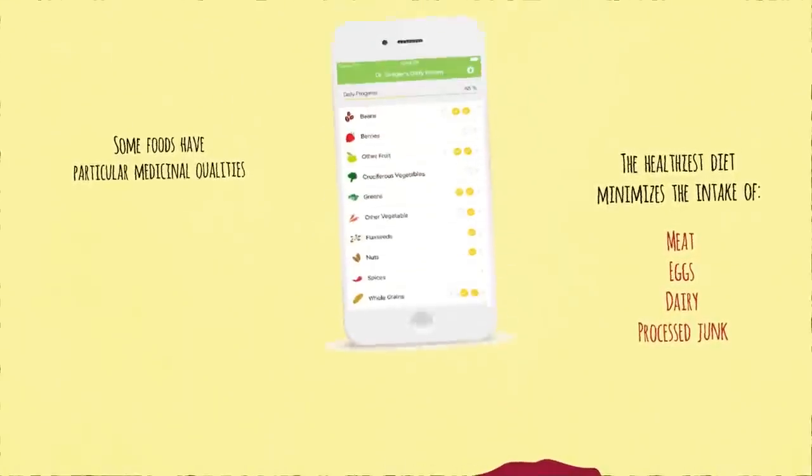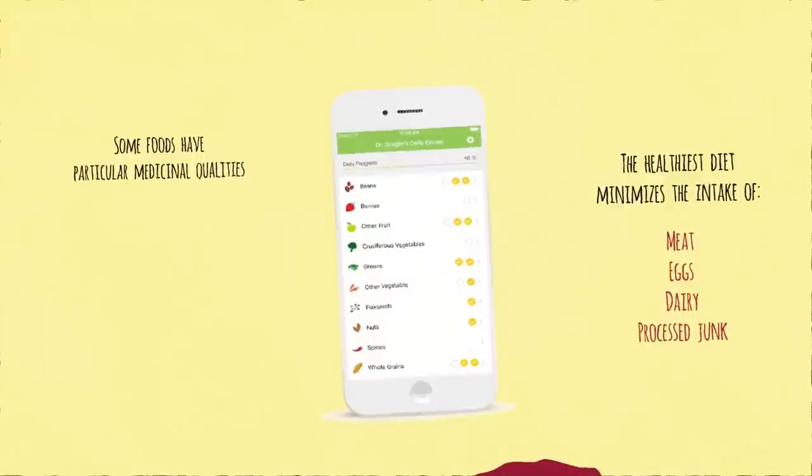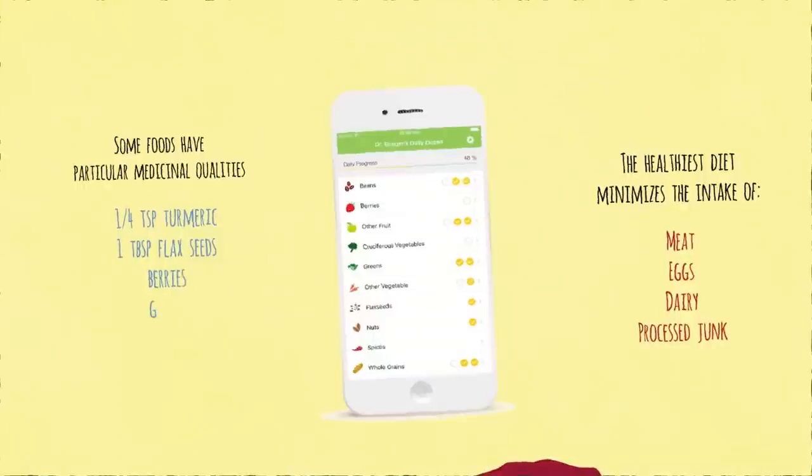Some foods, though, have particular medicinal qualities, and so I then center my recommendations around a daily dozen checklist of all the things I try to fit into my daily routine. So, for example, I recommend a quarter teaspoon of the spice turmeric a day, a tablespoon of ground flaxseeds, berries every day, greens every day. I talk about the healthiest beverages, the healthiest sweeteners, how much exercise to get. The whole daily dozen list with recommended serving sizes is available as free apps for both Android and iPhone. Just search for Dr. Greger's daily dozen.